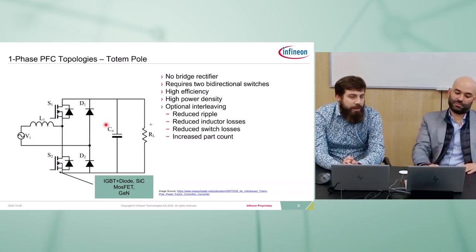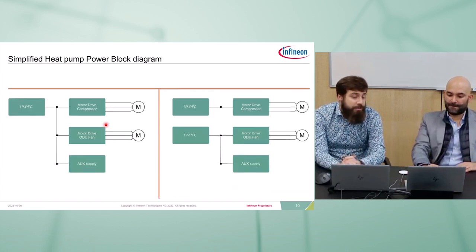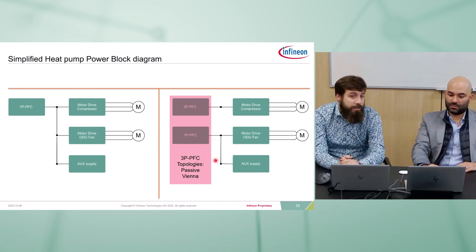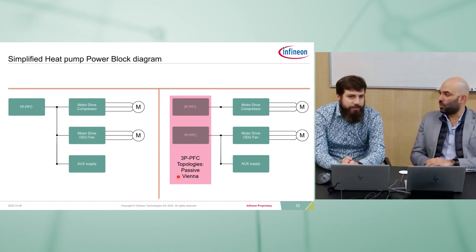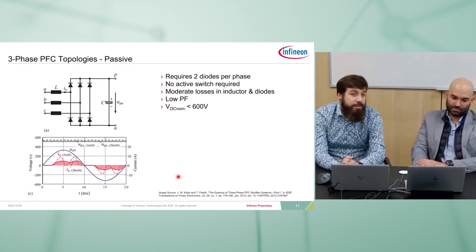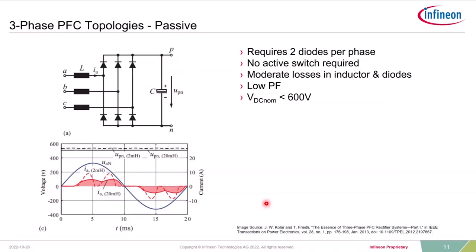Let's move into the three-phase story. Looking at the three-phase PFC, we have the options of going passive for a certain power level or going active. For the passive option, you only need six diodes and three inductors — the simplest and cheapest form. However, as you can see, the power factor you can get is never ideal to what you're actually targeting. So you're limited in the power you can get out of this design, meaning you're not fully using the power available at your mains.